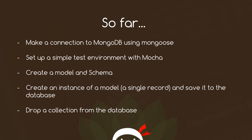We know how to set up a simple test environment with Mocha with those describe and it blocks. We've created a model and a schema — remember a model represents a collection in the database, and the schema represents the structure of the individual records in that collection, for example the different properties they have and the types of those properties. We've seen how to create an instance of a model, i.e. a single record, and then save it to the database.